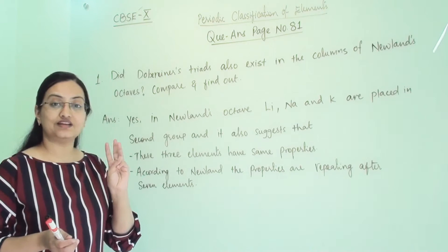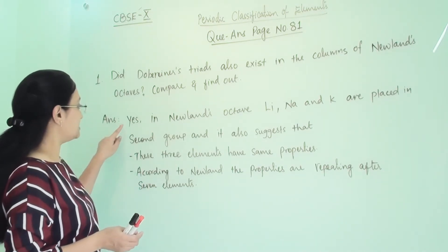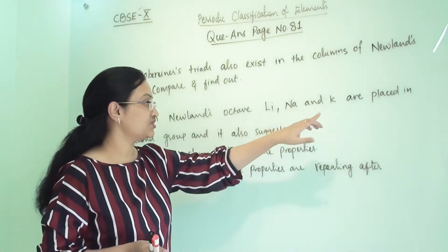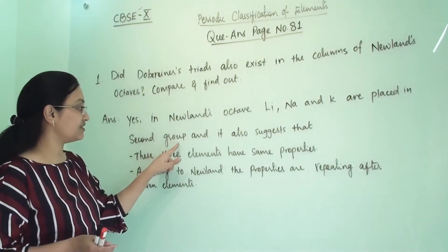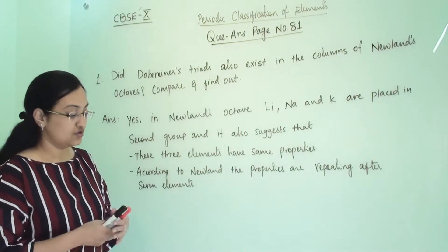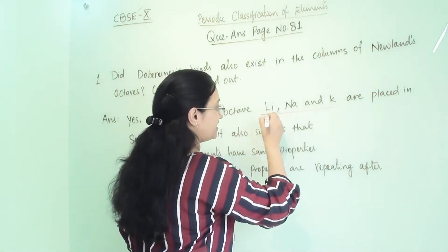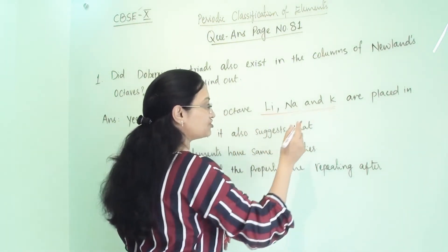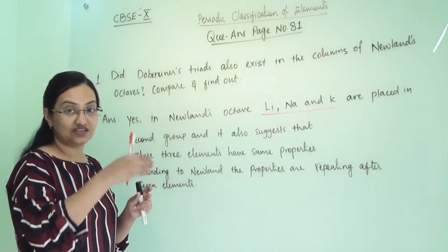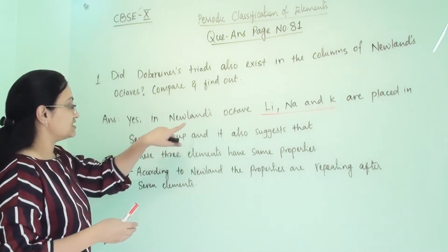Yes, comparing the two periodic tables of Dobereiner and Newland, we find that there is one triad where lithium, sodium, and potassium are placed in the second group in Newland's octave as well. So this is the similarity between the two classifications.